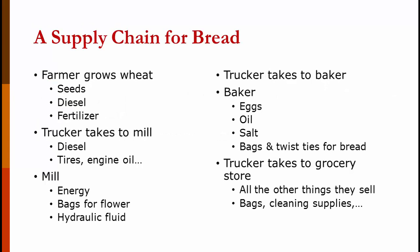Let's talk a little about a supply chain for bread — just a small part of it. The farmer grows the wheat, which seems like the beginning, but the farmer has to buy seeds, diesel, fertilizer, and lots of other things. Once the wheat is harvested, it's loaded on a truck to take it to the mill. The trucker has to buy diesel, tires, engine oil, and everything it takes to keep a truck running. When it gets to the mill, the mill buys energy, bags for the flour, hydraulic fluid, and lots of other things.